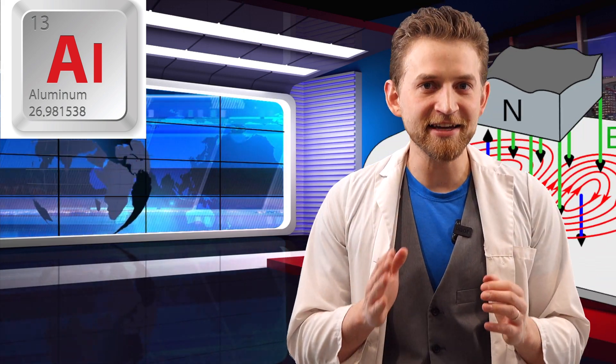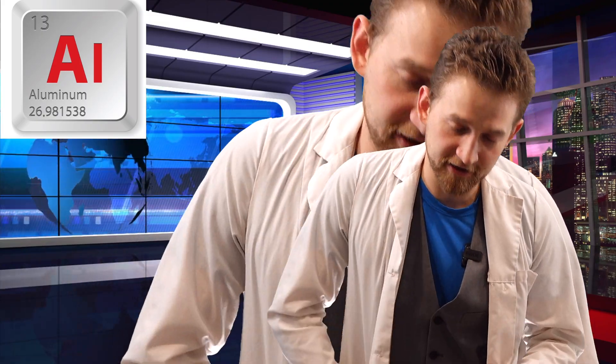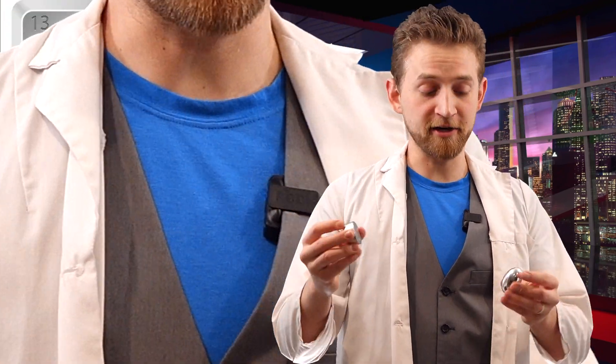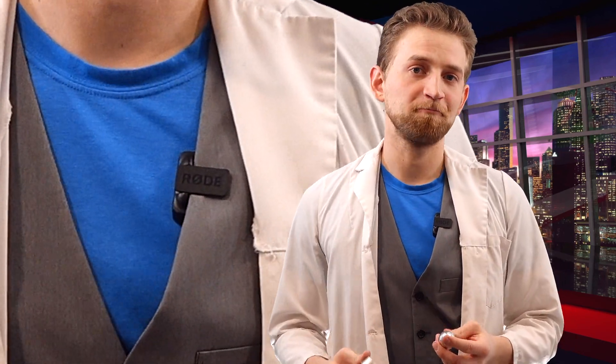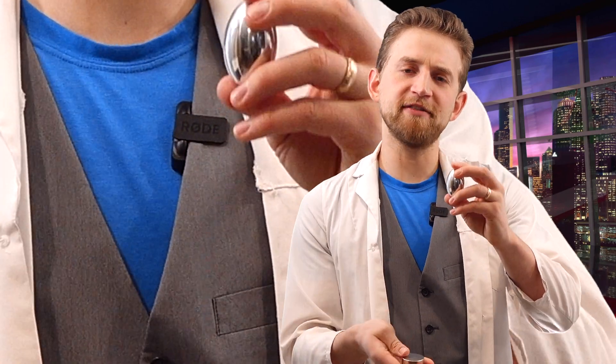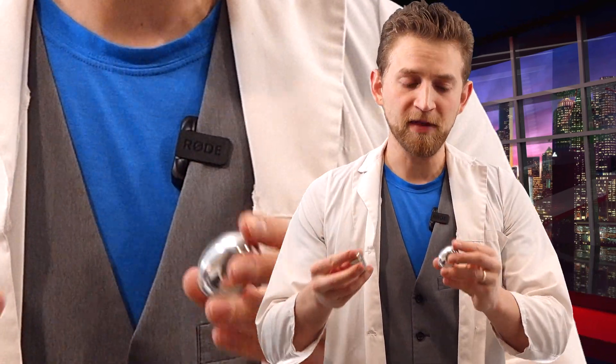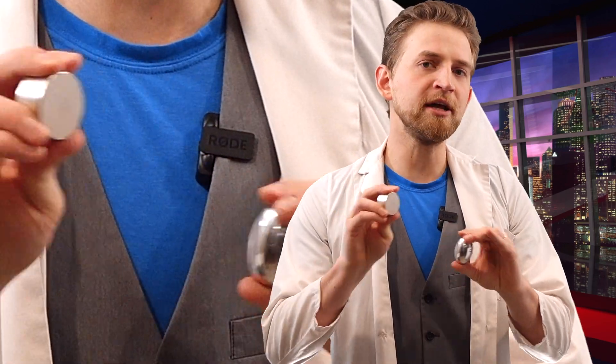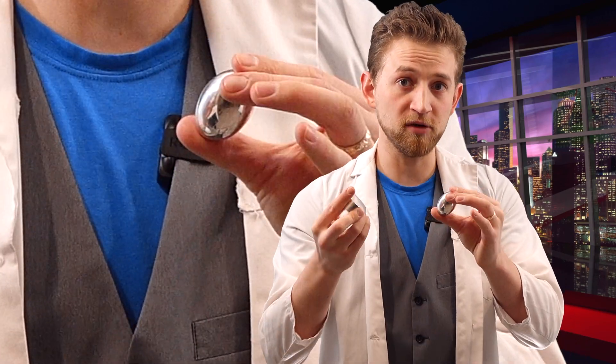This is where we need to have a working understanding of eddy currents. This lump of aluminum is non-magnetic. I have a really powerful neodymium magnet here, and I bring them together. They're not attracted to each other at all. Now, eddy currents are the flow of electrons that is created when a conductor, like aluminum or copper, is introduced to a moving magnetic field.